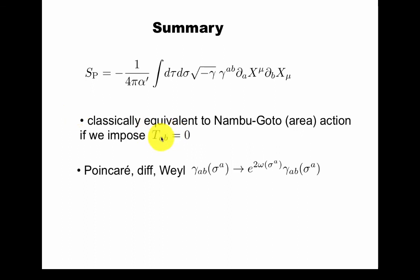And this is simply because the stress energy tensor is defined as the variation with respect to the worldsheet metric. And that was what we needed to impose to get back to the Nambu-Goto action from the Polyakov action.